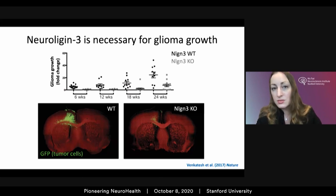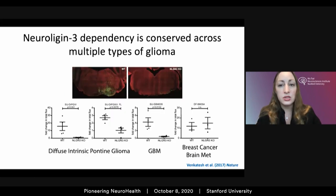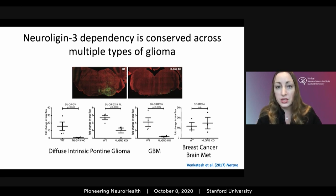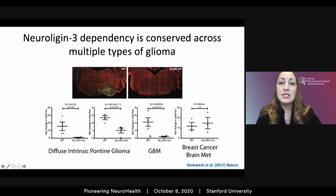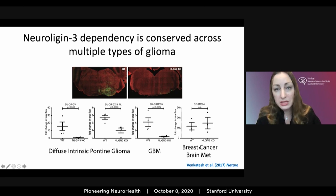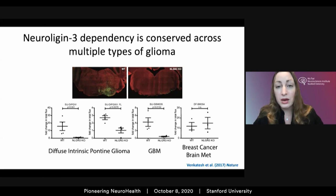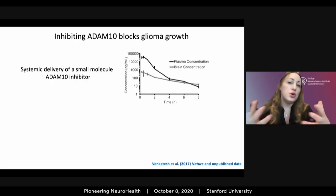There is a stagnation of glioma growth in the Neuroligin-3 knockout environment until about six months, when a subset of xenografts appear to circumvent this dependency and grow through mechanisms of resistance. This dependency on Neuroligin-3 is conserved across multiple different forms of glioma and in multiple brain regions — it's just as true for diffuse intrinsic pontine glioma growing in the pons as for GBM growing in the cortex. However, this dependency does not extend to a patient-derived model of breast cancer brain metastasis.